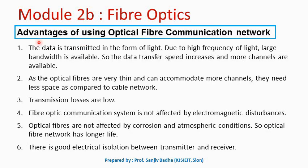There are many advantages of using an optical fiber communication network. The main advantage is that the signal is transmitted in the form of light, and therefore due to the high frequency of light, larger bandwidth is available. Due to larger bandwidth, data transfer speed increases and more channels are available, so more signals can be transmitted simultaneously. As optical fibers are very thin, they can accommodate more channels with less space required.